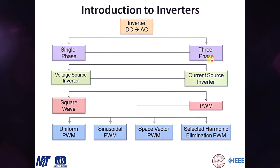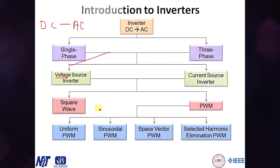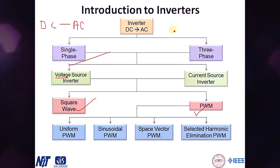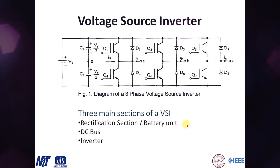Let's first understand inverters. There are two types: single-phase and three-phase. An inverter is a device used to convert DC current to AC. Based on what kind of output you need, there are two types: voltage source and current source inverters. Inverters use power electronic switches like IGBTs or GTOs, which need to be switched at different frequencies using square wave or PWM techniques. PWM is the most preferred switching technique.